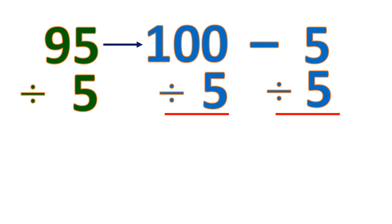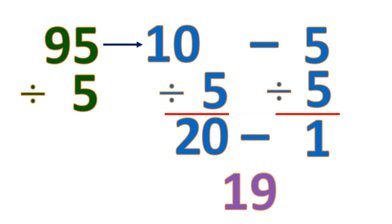So let's divide. Copy the 0, and then divide the remaining. 10 divided by 5 is 2, then 5 divided by 5 is 1. Since we subtract, we also subtract their quotients. So 20 minus 1 is 19. So 95 divided by 5 is 19.